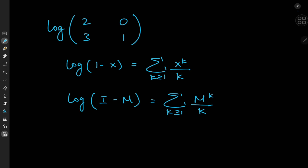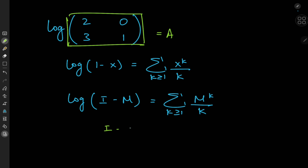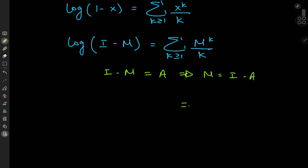So whatever the infinite series on the right-hand side converges to is the logarithm of the matrix I minus M. Now let's take the given matrix and call it A. So we're looking for a matrix M such that I minus M equals A, which of course implies that M equals I minus A. So I in this case is the 2×2 identity matrix.